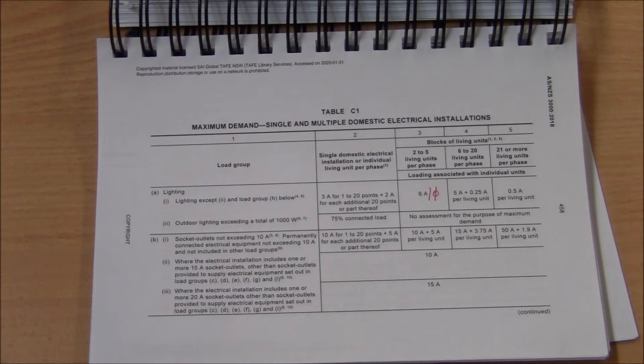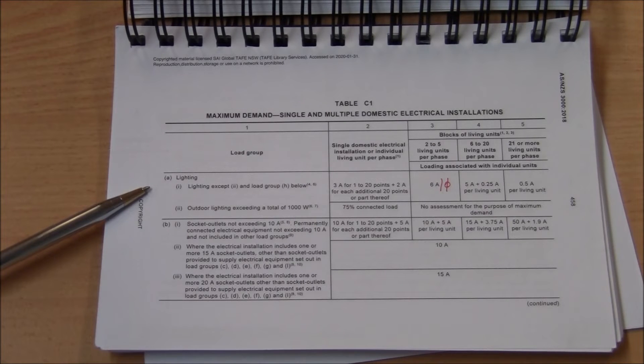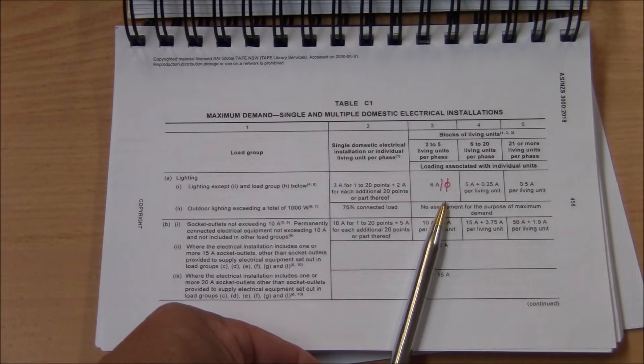First task is to identify the appropriate load group. We have 18 lighting points on the equipment list and we also have six meters of track lighting. Lights are in load group A. The quantities: 18 lighting points as well as six meters of track lighting per living unit. Column 3 indicates that lighting will contribute 6 amps per phase.